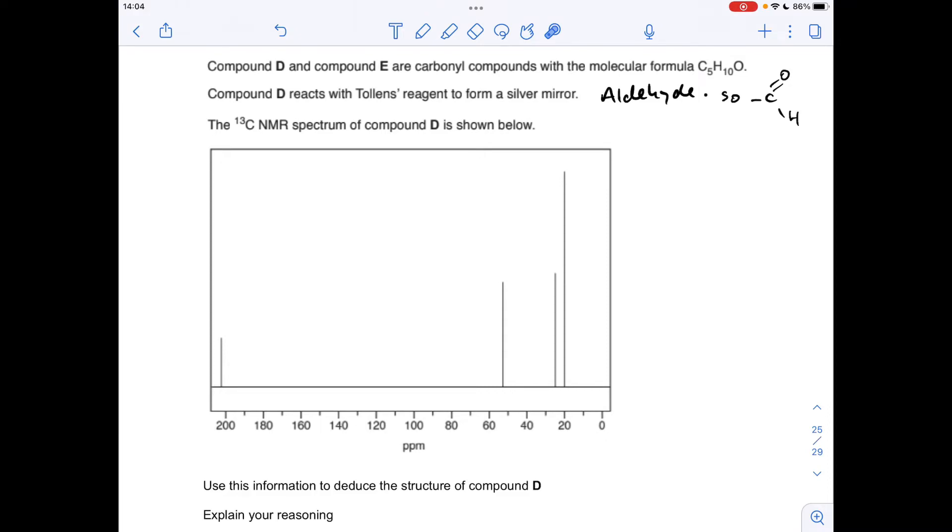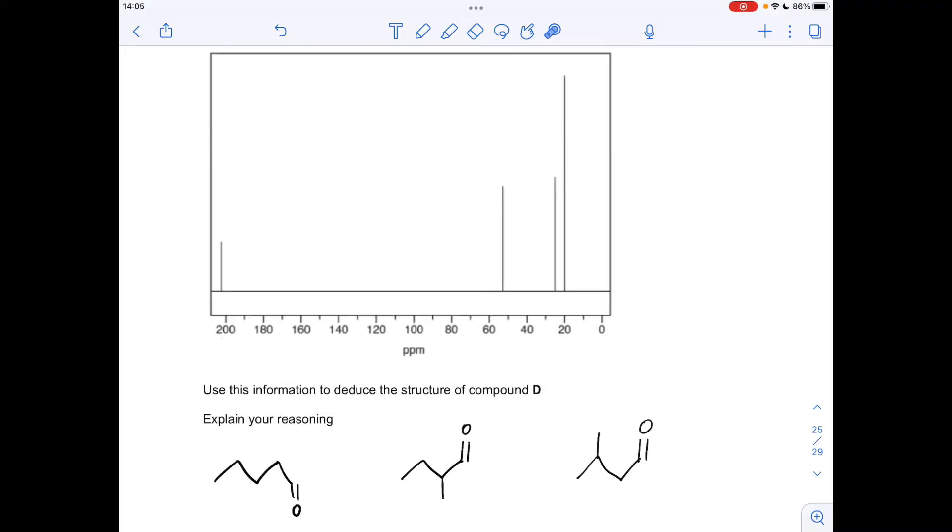So looking at the carbon-13 NMR spectrum, we've got four signals, so that means there are four carbon environments in the molecule. Now, it's C5, so there must be a pair of equivalent carbons in this molecule, otherwise we would have had five peaks.